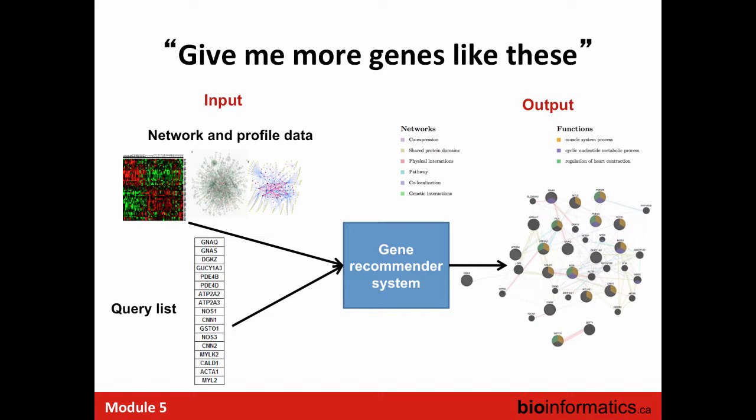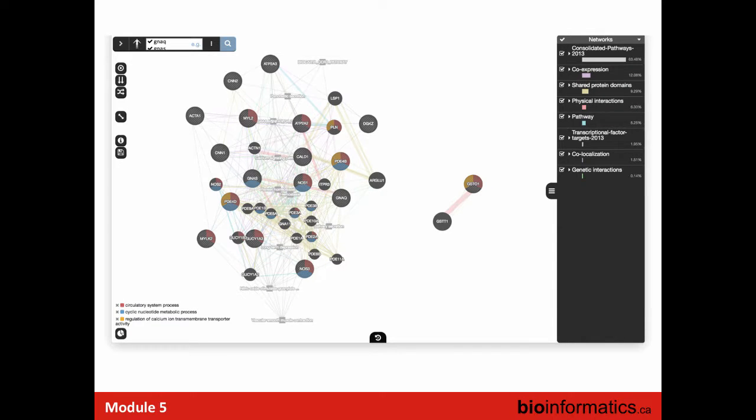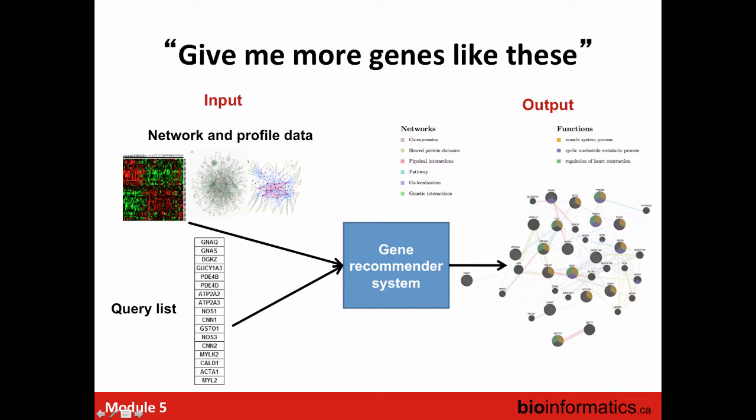That's what 'give me more genes like these' does. If you put in a gene list along with network data, a context-dependent gene recommender system will choose which networks are most relevant to answering questions about that list — the networks that already link the genes in the list closely together — and then returns more genes like those.